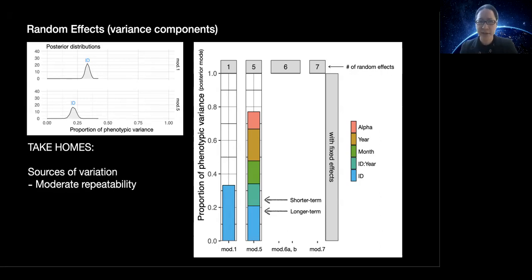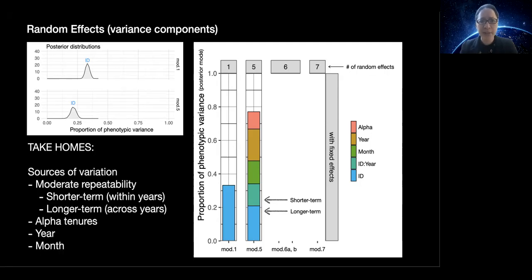So what are the take homes here? Moderate repeatability accounts for approximately a third of the variation in our trait. And this repeatability can be broken down into both a shorter term repeatability within years and a longer term repeatability across years. Importantly, we also can see that male alpha tenure, year of data collection, and month of data collection also account for considerable variation in our behavioral trait.